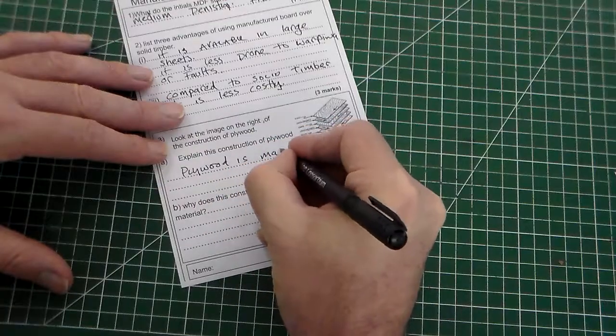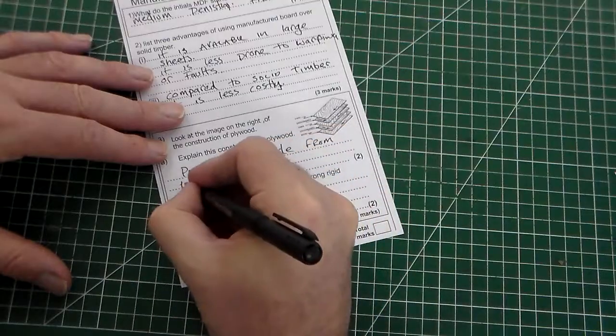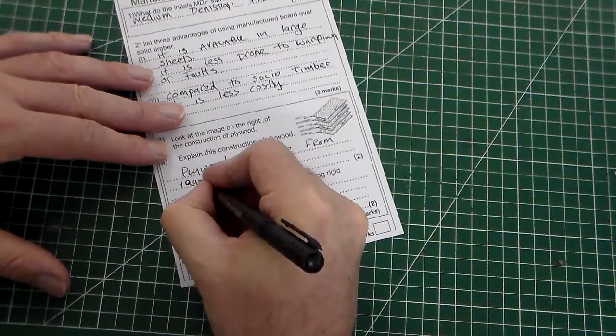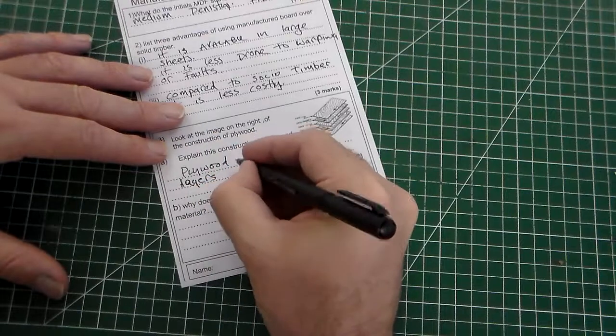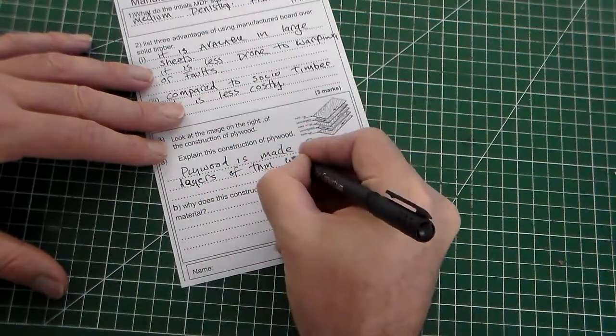Plywood is made from layers of thin wood.